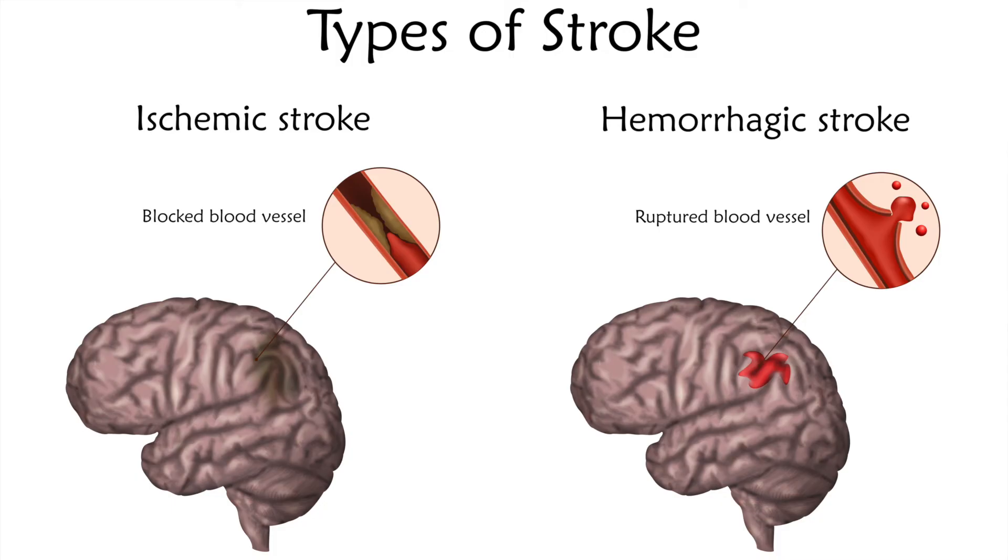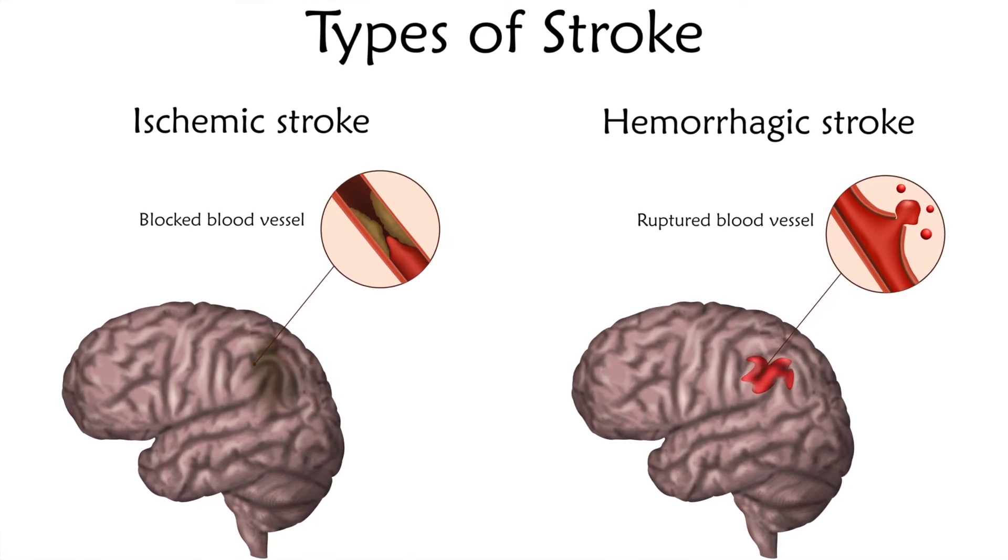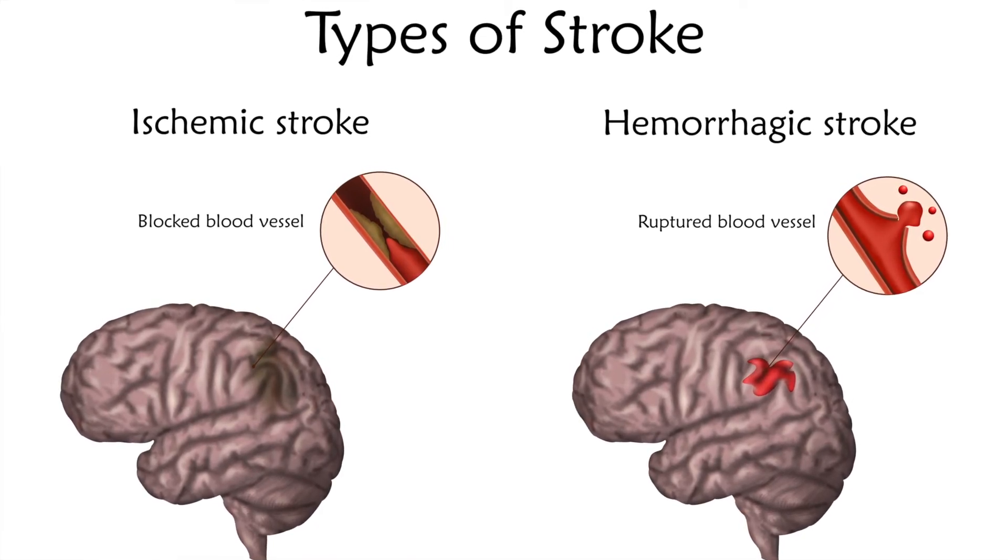How are strokes and aneurysms related? A stroke can occur when a blood vessel in the brain is blocked — that's called an ischemic stroke — or when a blood vessel in the brain ruptures, which is called a hemorrhagic stroke. The ischemic stroke is the most common type and can happen when a blood clot travels into the brain from somewhere else, or when there's plaque buildup in the arteries of the brain.